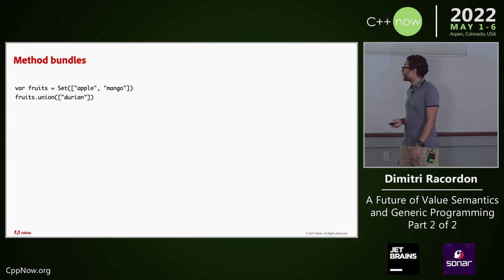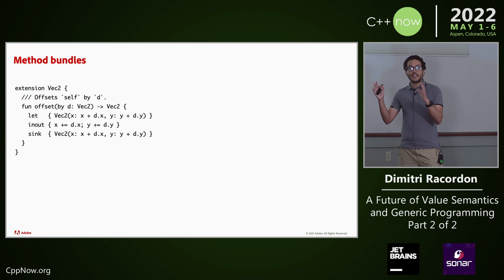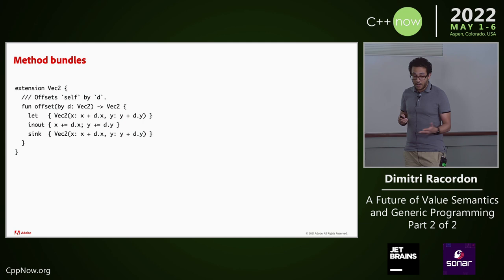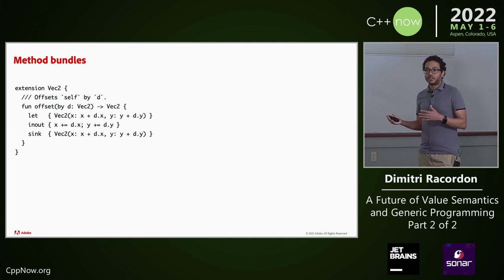The reflex in C++ is probably to think about overloading — but we said we don't want overloading. Instead, we steal the idea of grouping setters and getters in Swift and create this kind of bundle. Now I have all the implementations of the offset method for a vector grouped into a single declaration — only one declaration, only one signature, and only one documentation.